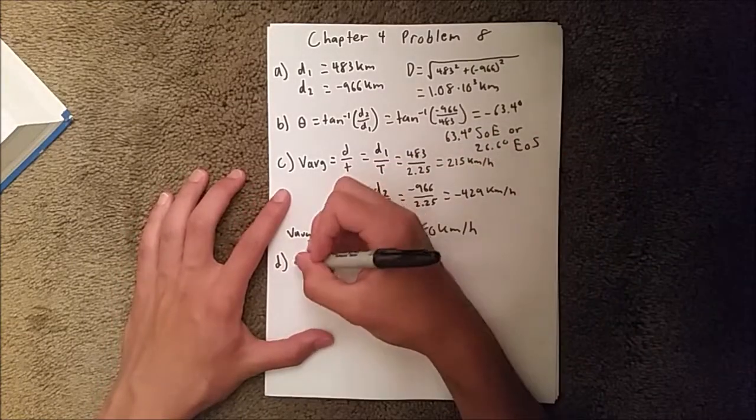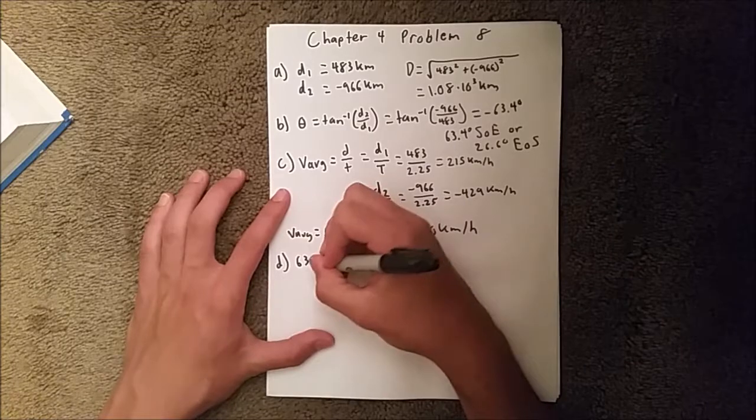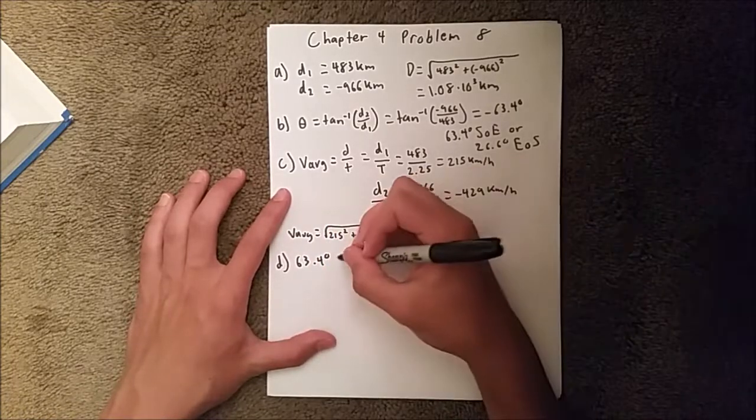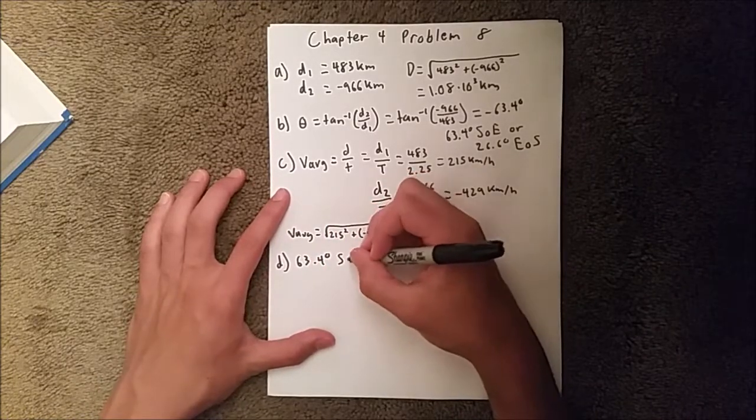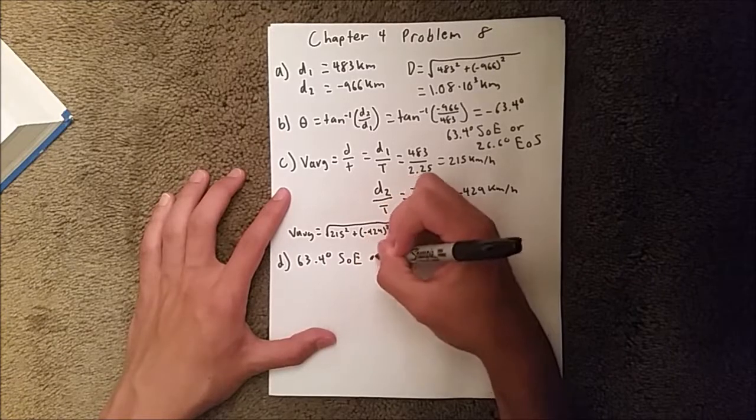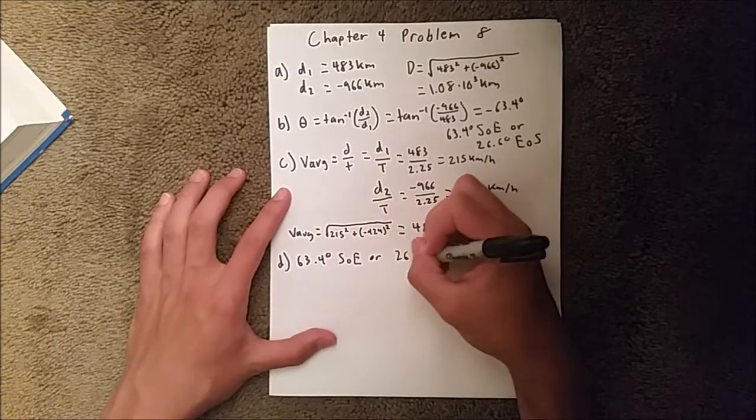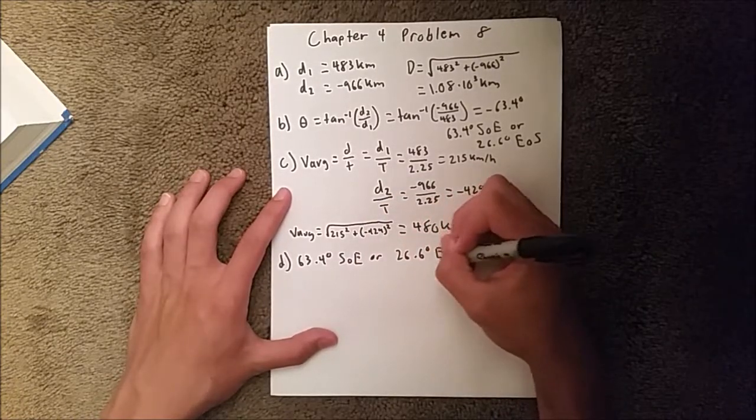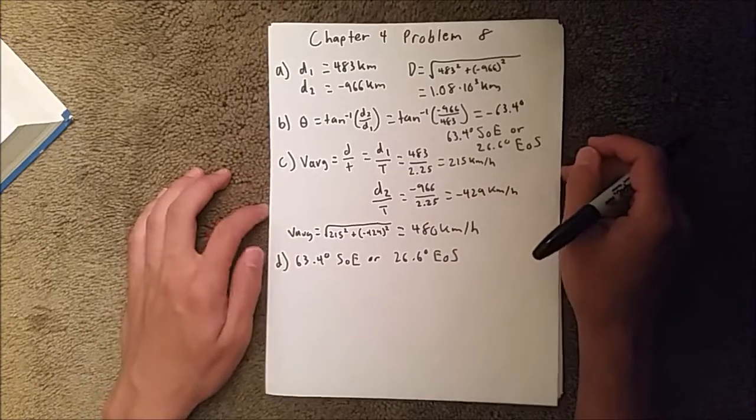So, in this case, the answer would be the same as part B, which is 63.4 degrees south of east, or 26.6 degrees east of south. Again, either answer would be acceptable.